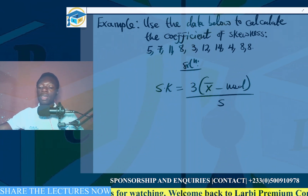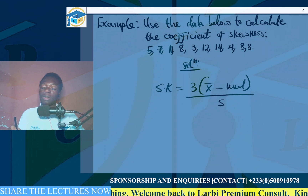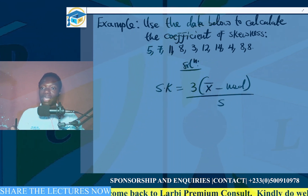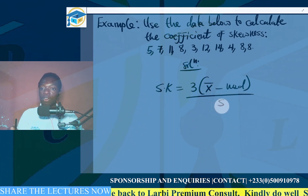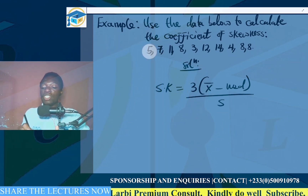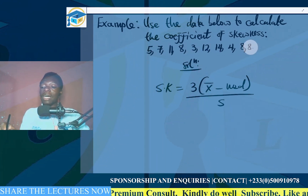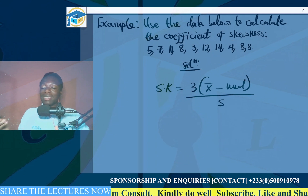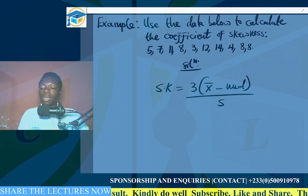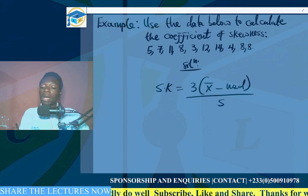That means we need to find the value for the mean, the value for the median, and the value for the standard deviation. We are going to arrange this raw ungrouped data in ascending order of magnitude so that we can determine these parameters.